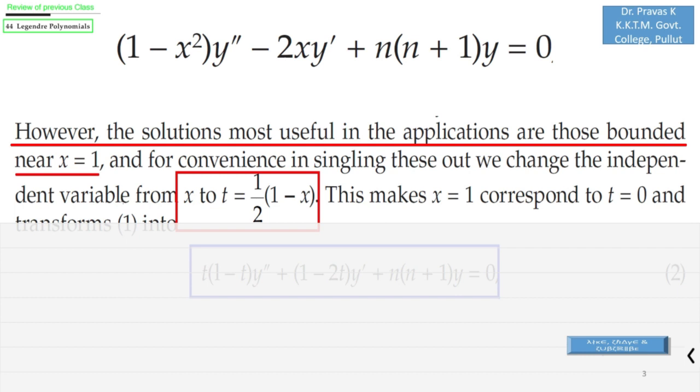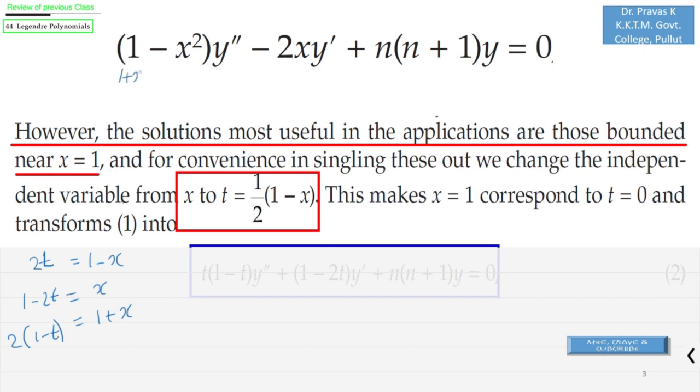When we apply this change, we can see that 2t = 1 - x, and therefore x = 1 - 2t. And what is 1 + x? It's 2 - 2t, that is 2(1-t). Now using this you can replace this part with (1+x)(1-x).